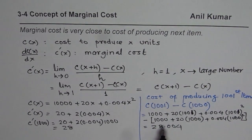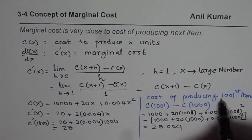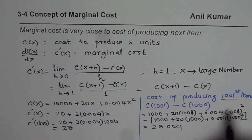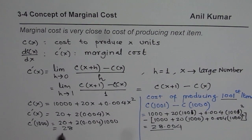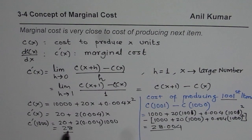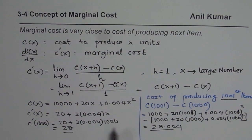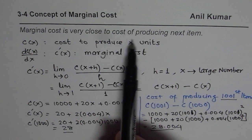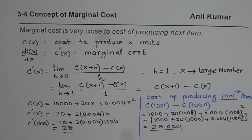So what you see is that the cost of producing the 1,001st item is almost the same as the marginal cost at a production level of 1,000. That is what marginal cost is — it is actually very close to the cost of producing the next item. And it works fairly well when the number of items being produced is much larger.